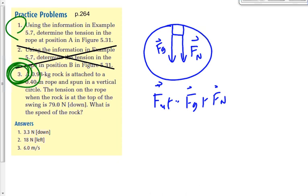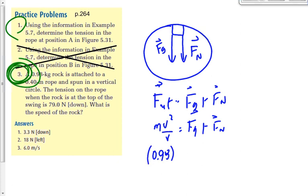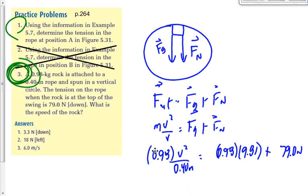F_net equals F_G plus F_N, and F_net also equals M·V²/R. So M·V²/R = F_G + F_N. Plugging in: mass is 0.98 kg, radius is 0.40 m, F_G is 0.98 × 9.81, and the normal force is the rope tension of 79.0 N. Now let's assign signs — the centripetal force at the top acts downward, gravity is negative, and the normal force is also negative.